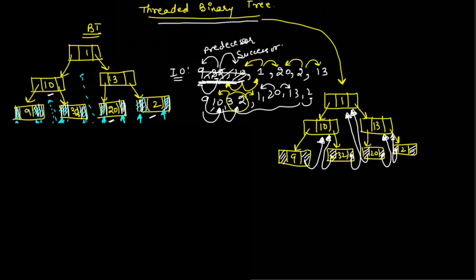In this threaded binary tree, some spaces are still empty, and we need to identify how to effectively use those remaining spaces. Now let us see what is the structure of a threaded binary tree and how we can utilize this space.